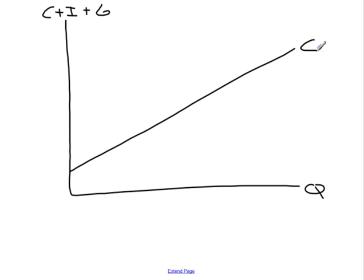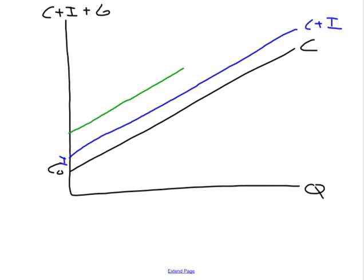Then, given the original consumption function, we can just add I plus G. If that's the level of investment which stays constant.